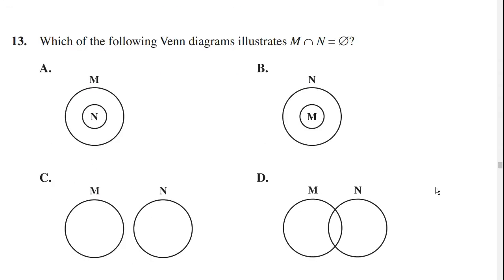Which of the following Venn diagrams illustrates M intersect N equals null? So the upside-down U means intersection, which means anything that the two sets have in common, and the circle with the slash through it means null, which means nothing. So M and N have nothing in common. Well, that only happens with C. There's no intersection area at all. So the answer is C.